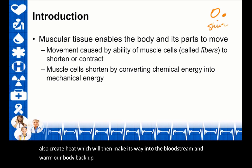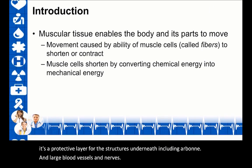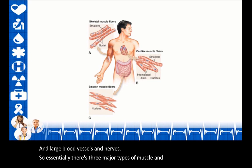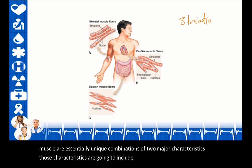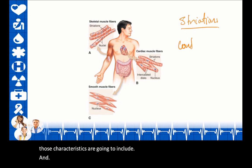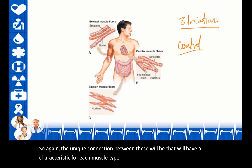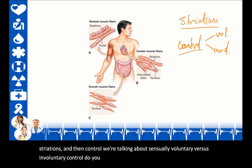Shivering is a discoordinated contraction of muscle fibers that doesn't result in gross movement. Instead, it fires individual muscle fibers to create energy, and in that process we also create heat, which warms our body back up. Another function of muscle is that it's a protective layer for structures underneath, including bone, large blood vessels, and nerves. There are three major types of muscle, which are unique combinations of two major characteristics.